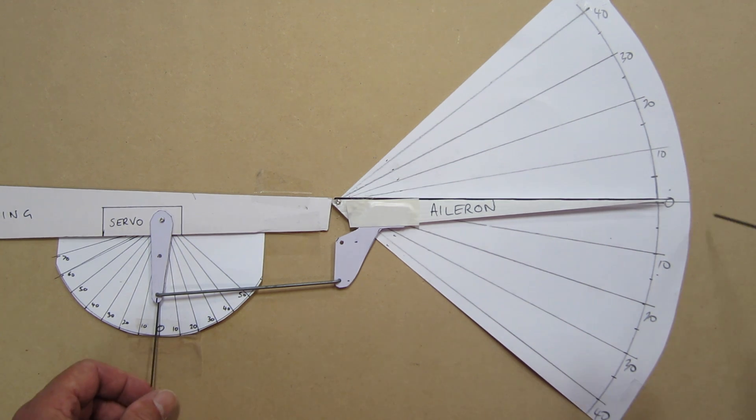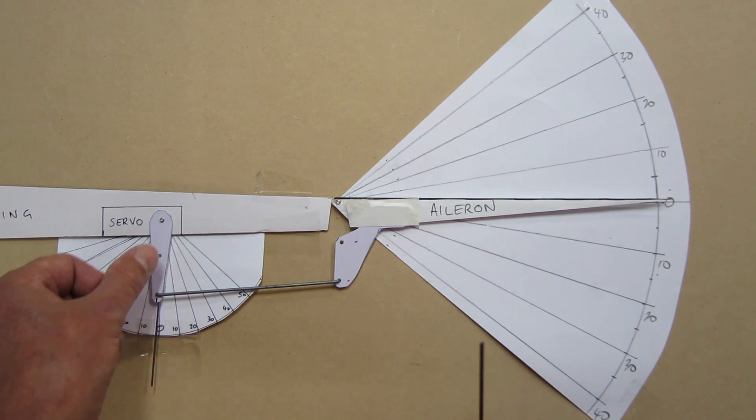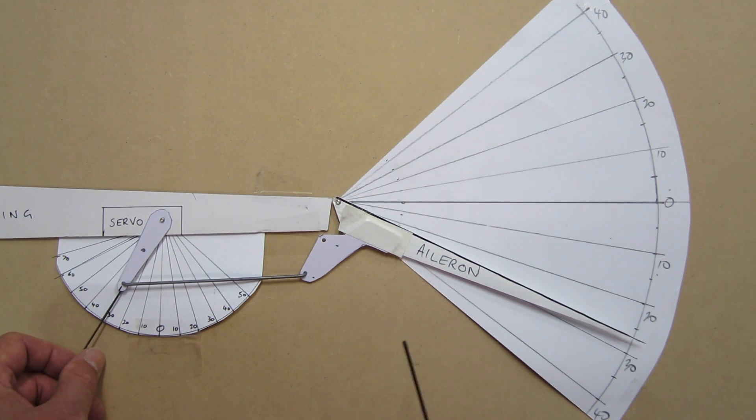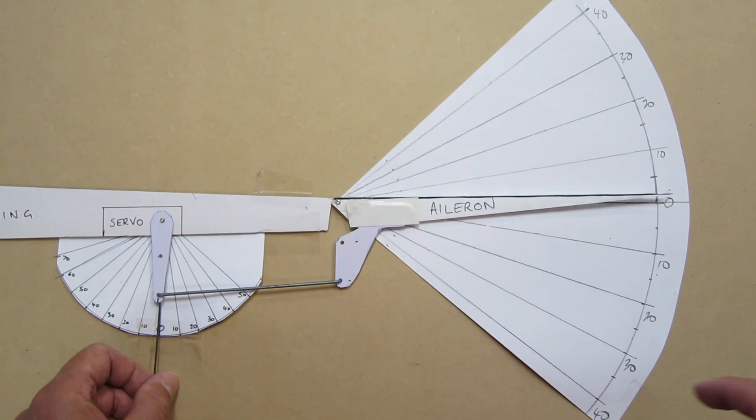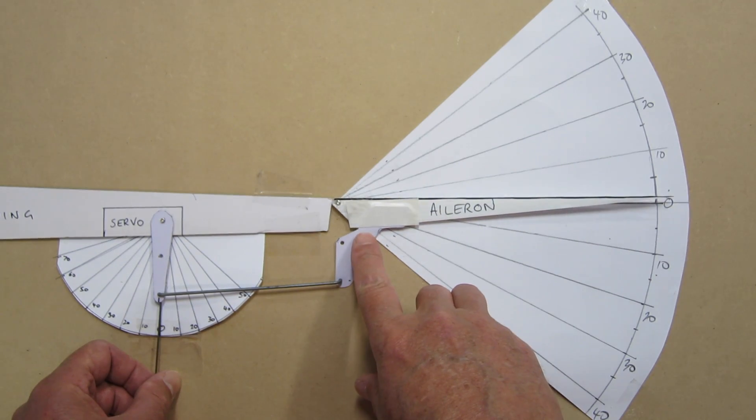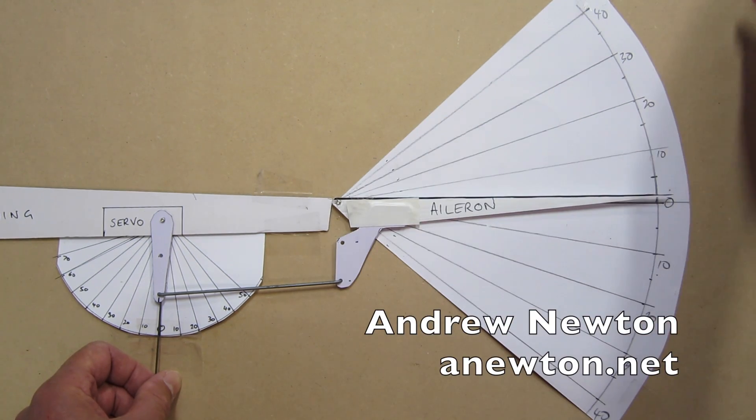So if you want to add some aileron differential, which makes the aileron go up more than it does go down, there are two simple ways to do it without even having a programmable radio. One is to angle the servo arm forward and use a longer push rod, and the other is to move the control horn back further along the aileron as long as it's bottom mounted.